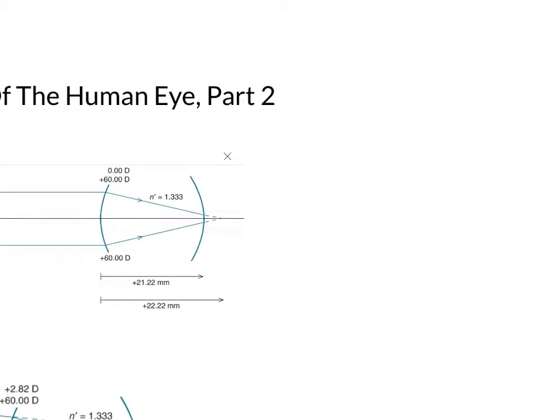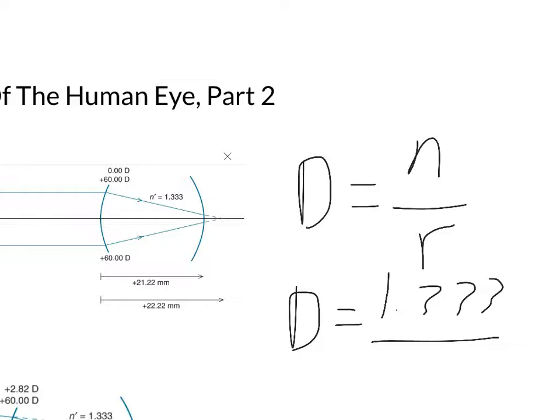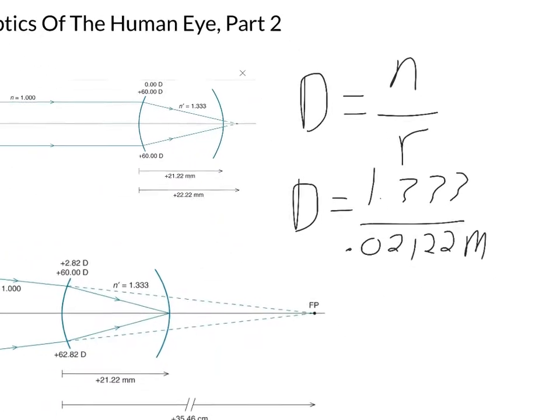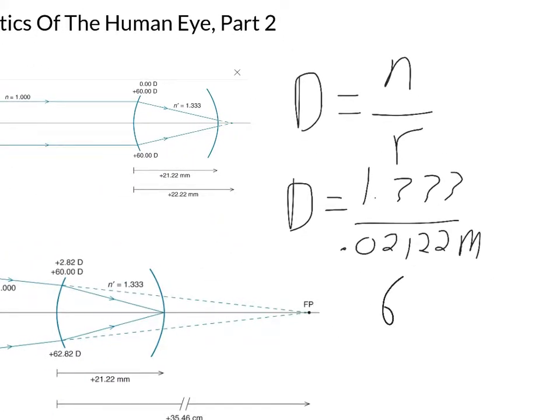You do D equals N over R. N being the index of refraction inside the eye, and R being 21 millimeters. So D equals 1.333 divided by 0.02122 meters. You have to convert it to meters. So plug this into the calculator, and you will get 62.82 diopters.